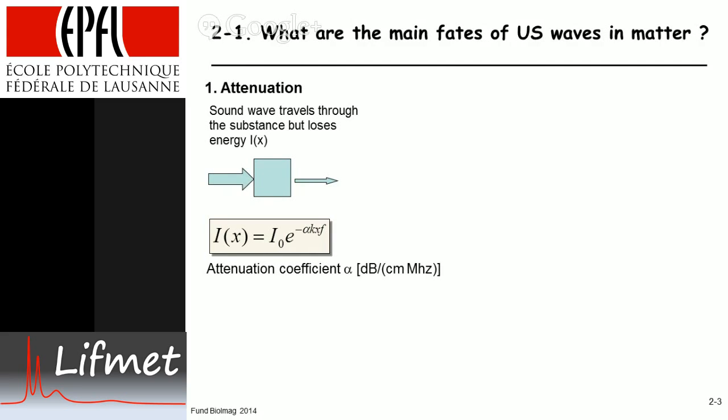What are these factors in the exponent? We have the attenuation coefficient α, which is given in decibels per centimeter per megahertz. Decibels per centimeter makes sense—it's the attenuation per centimeter. And then it's per megahertz because it is frequency dependent. Usually it's given in units of decibel, and the decibel here for energy is ten times the logarithm of the ratio of the intensity divided by the original intensity.